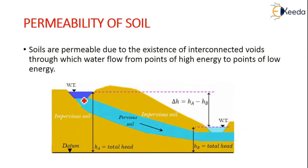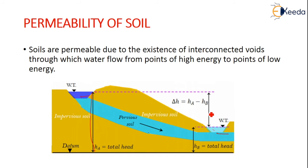This is a high energy point and this is a low energy point. This is a pervious soil and this is an impervious soil. This is a datum. This is considered as the total head of the higher point, and this is the total head of the lower point, and the difference is known as delta H.